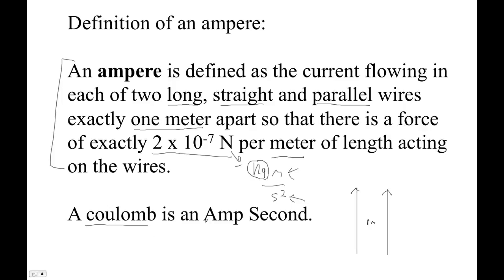But this is all defined in terms of that. So a coulomb is literally defined as an amp-second. There's really no sense that an amp is a coulomb per second — of course it is — but that doesn't define what an ampere is.